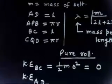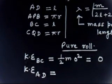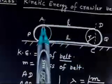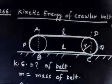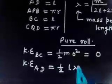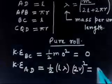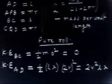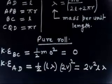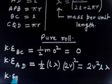Now what is the kinetic energy of part AD — the top straight segment? The topmost point in pure rolling has velocity 2v. So the kinetic energy of part AD is half times (λl) times (2v)², which simplifies to 2v²λl.